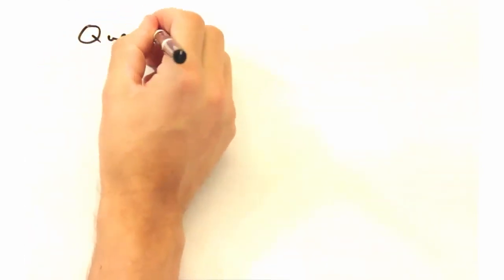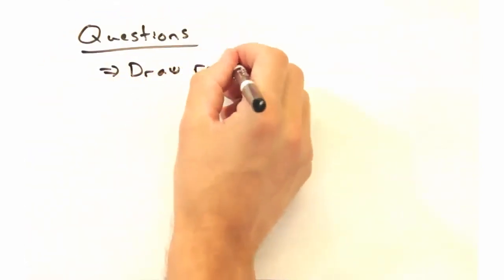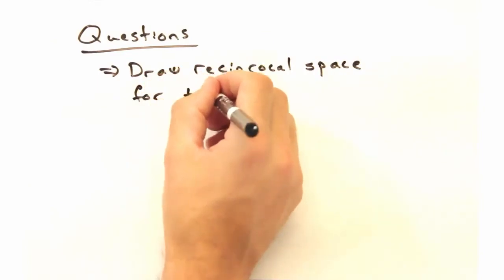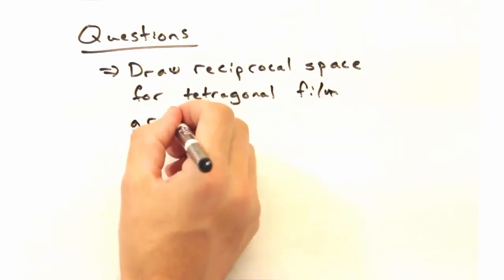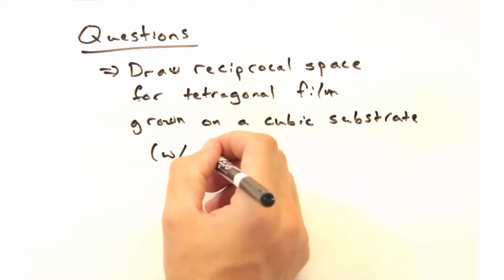Before we head out, if you'd like more practice with superposition of reciprocal lattices, draw what the reciprocal space would look like for a tetragonal thin film grown on a cubic substrate.